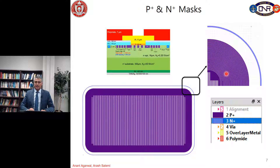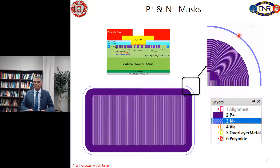The next mask is the N+ mask. You can see the P+ regions, active area, termination, the guard rings, and finally the N+ region. Again you can see this rounding as well.